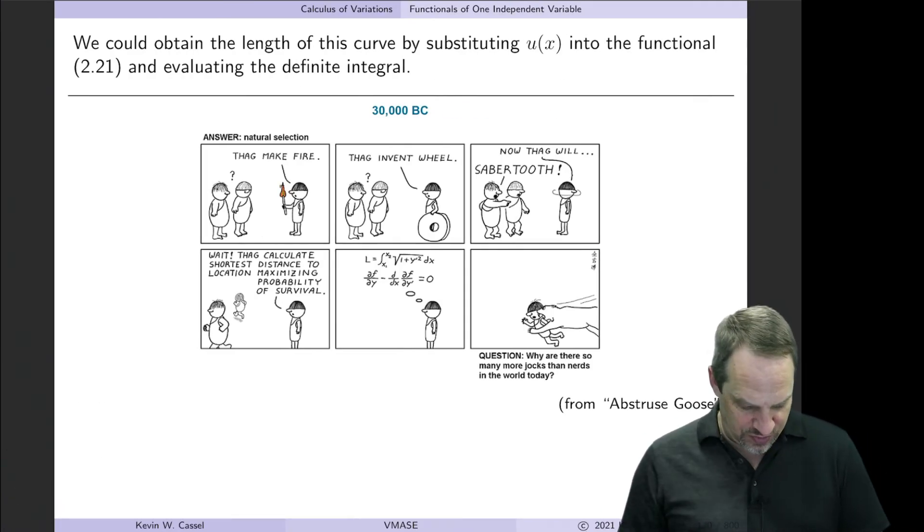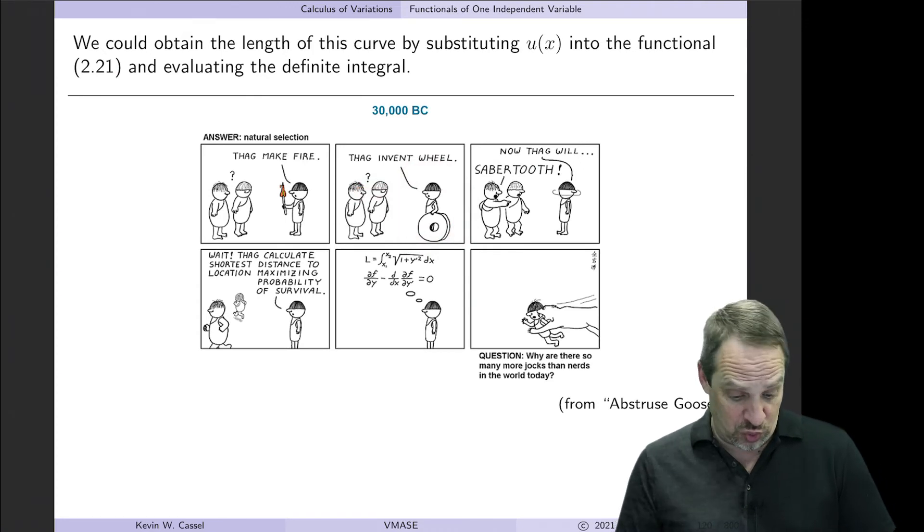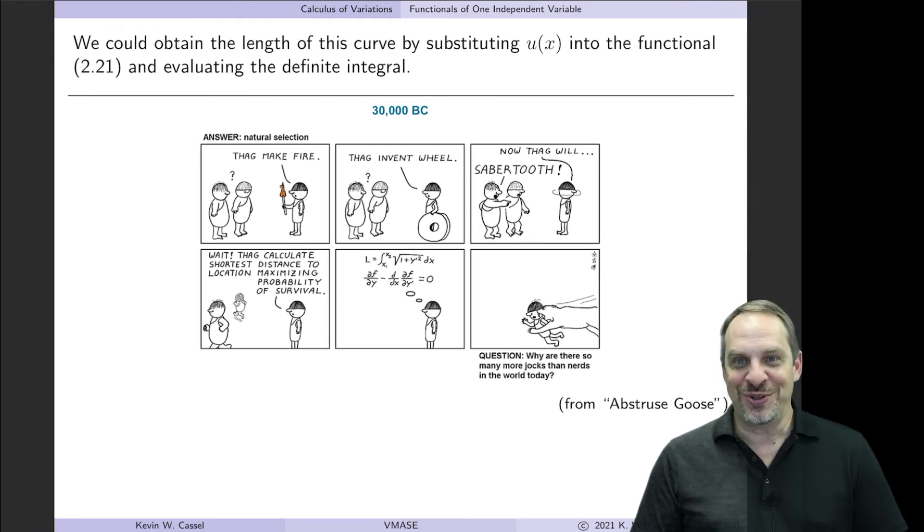Oh, here's a great cartoon. So here's a cartoon that illustrates how important this is. This is Abstruse Goose. Good stuff. This is set in 30,000 BC, just a few years ago. And this is posed in Jeopardy style. So we're given the answer, and we're asked for the question. So here's Thag, and he is impressing his buddies here by inventing fire. That doesn't seem to go over so well. So then he invents the wheel. They're still not really getting it.